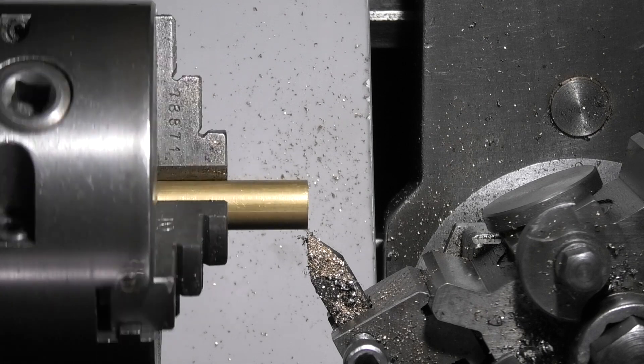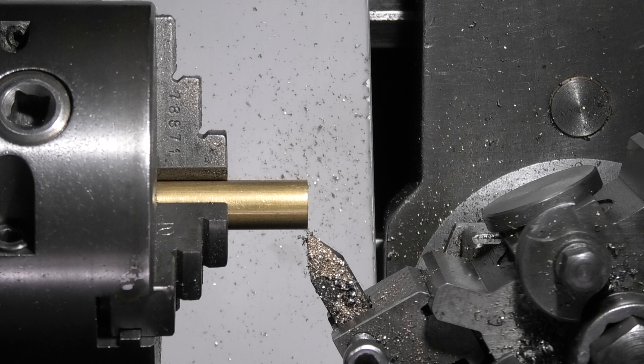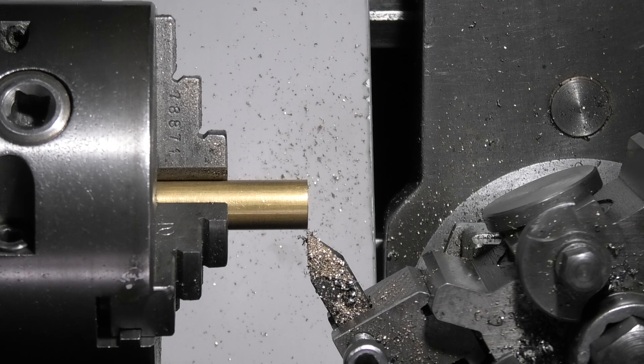Now making the depth stop locking screw. So it needs to be 3.8 diameter. And at the moment it's half inch.